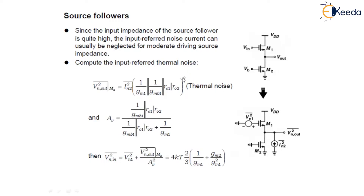Now to compute the input referred thermal noise voltage, we use this representation, expressing the output noise due to M2 as Vn²_out(M2) = In² · (1/gm1 ∥ 1/gmb1 ∥ Ro1 ∥ Ro2)². This is the thermal noise.